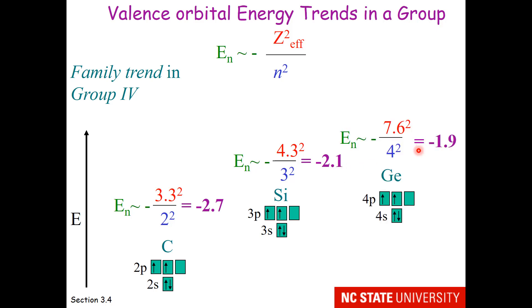And if we go to germanium, the valence orbitals are further still. So just as atomic size increases going down a group, valence orbital energies become further away from the nucleus as one goes down the group.